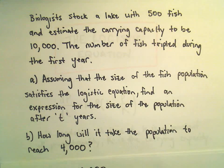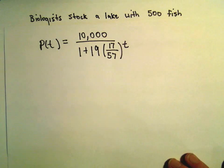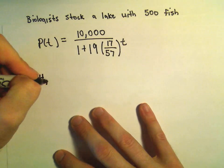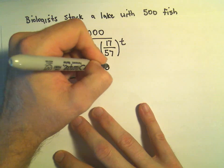In part B, we just want to know how long will it take before the population of fish reaches 4,000. Well, to do part B, all we have to do is plug 4,000 into the left side, set it equal to our equation, and simply solve for t.